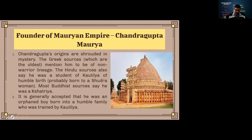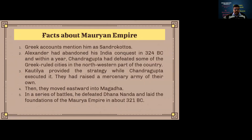The founder of the empire, Chandragupta Maurya, was a brilliant warrior. His origin is surrounded in mystery. The Greek sources, the oldest to mention him, describe him as being of non-warrior lineage — meaning he was a warrior by habit but not by birth. Hindu sources say he was a student of Kautilya, of humble birth, probably born of a Sudra woman. Most Buddhist sources, however, say he was a Kshatriya. It is generally accepted that he was an orphan from a humble family who was trained by Kautilya.